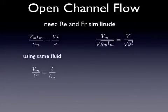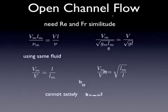If we do the same thing with the Froude number, what we find is that the velocity scale is related to the square root of the length scale. So these are completely contradictory. There's no way we can satisfy both of these at the same time.